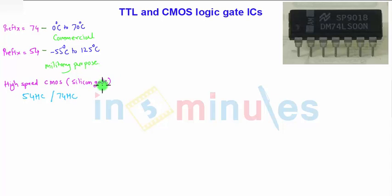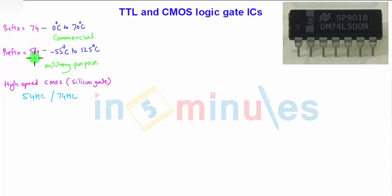These ICs, whether TTL or CMOS, are compatible with each other, and the prefixes with their series are the 74 and 54 series.